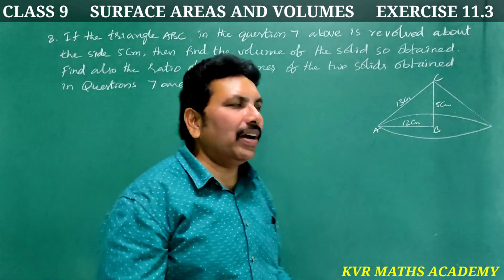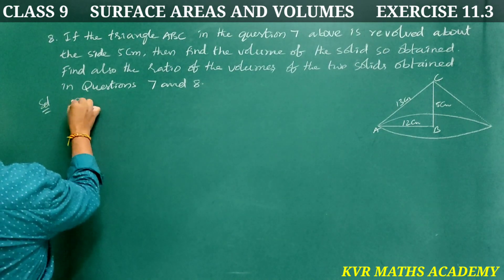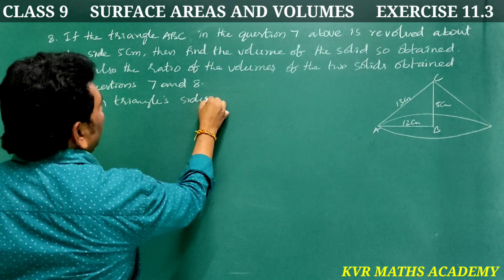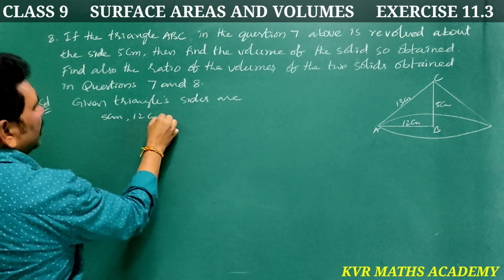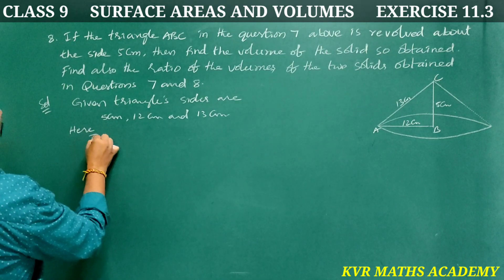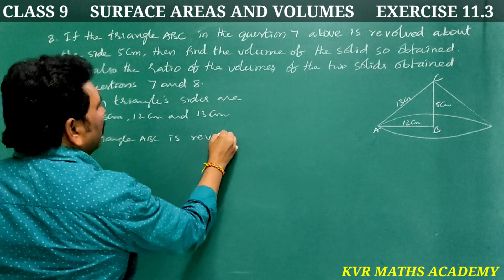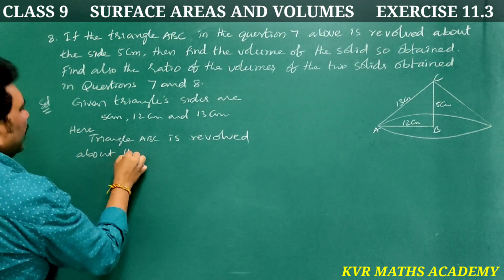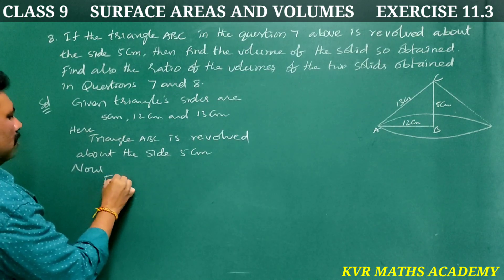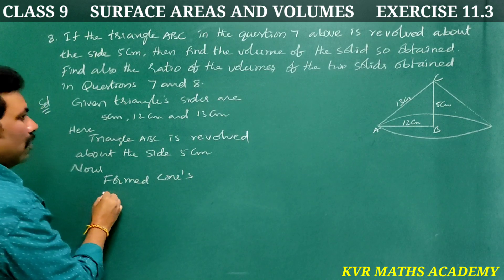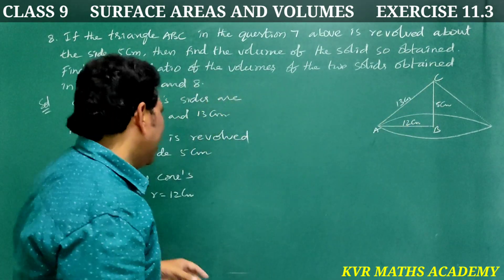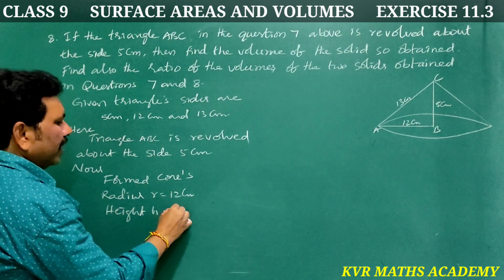Solution: Given triangle's sides are 5 centimeters, 12 centimeters, and 13 centimeters. Here, triangle ABC is revolved about the side 5 centimeters. Now the formed cone's radius r equals 12 centimeters and height h equals 5 centimeters.